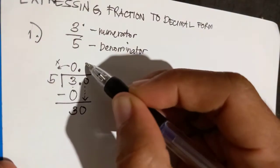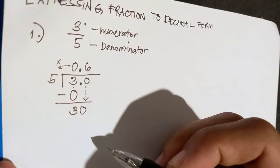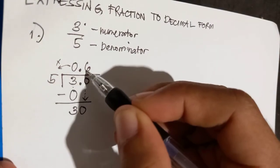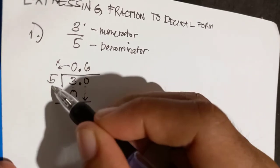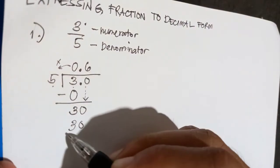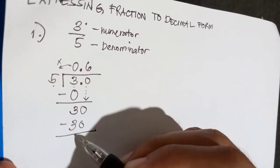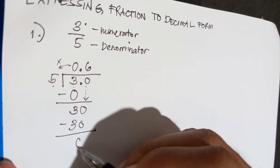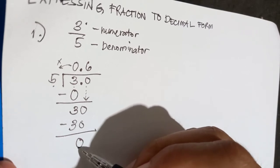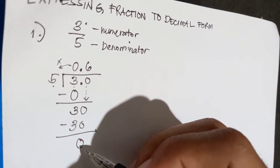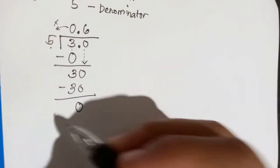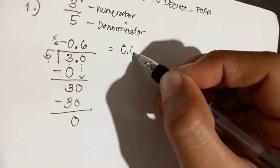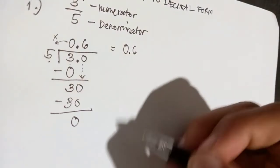30 divided by five — the answer will be six. Six times five will give you 30. Subtract: 30 minus 30 will give you zero, no more remainder. So therefore we will end here. The answer is 0.6, or six tenths.